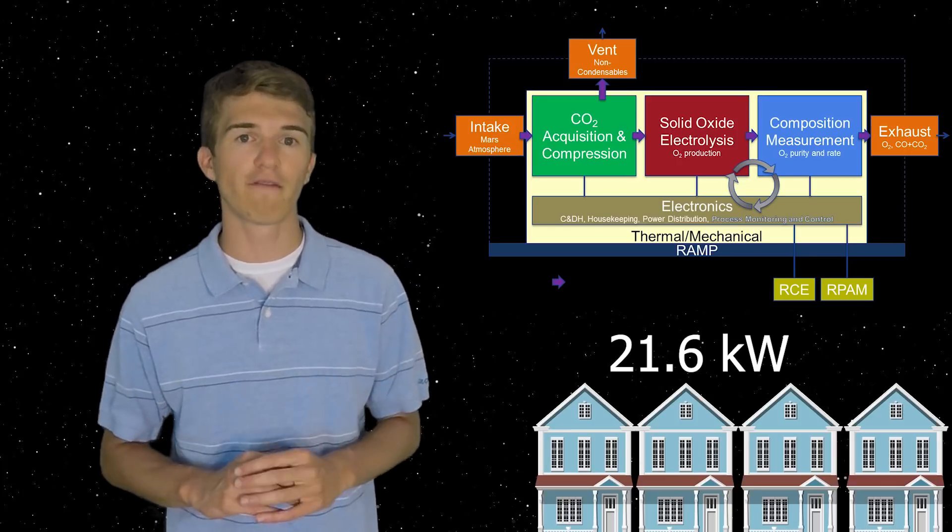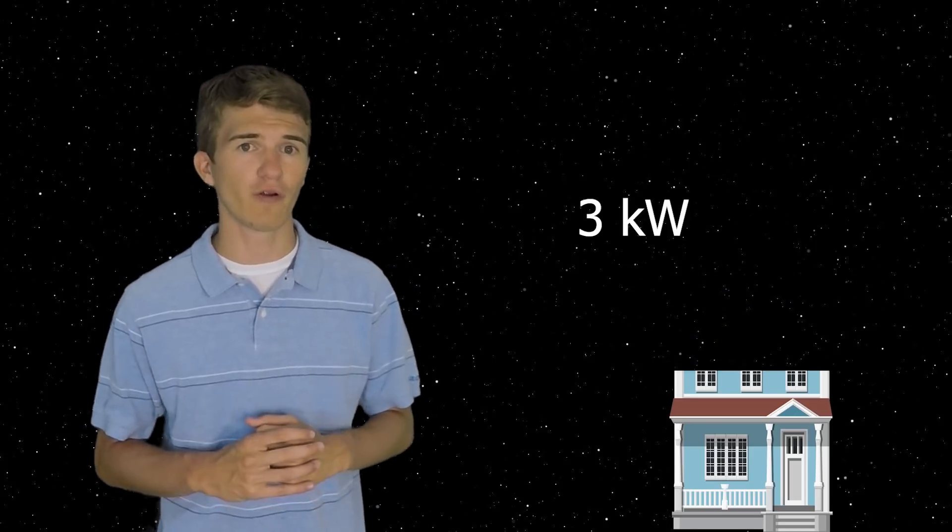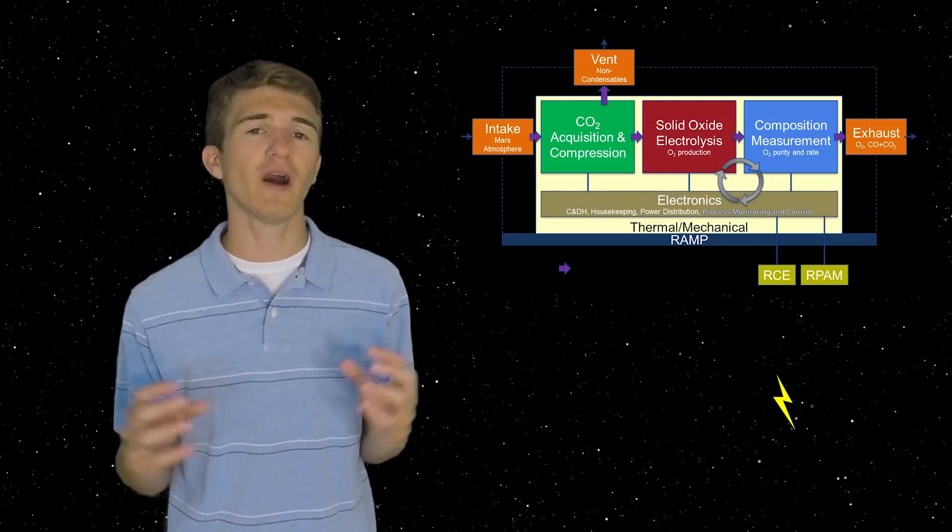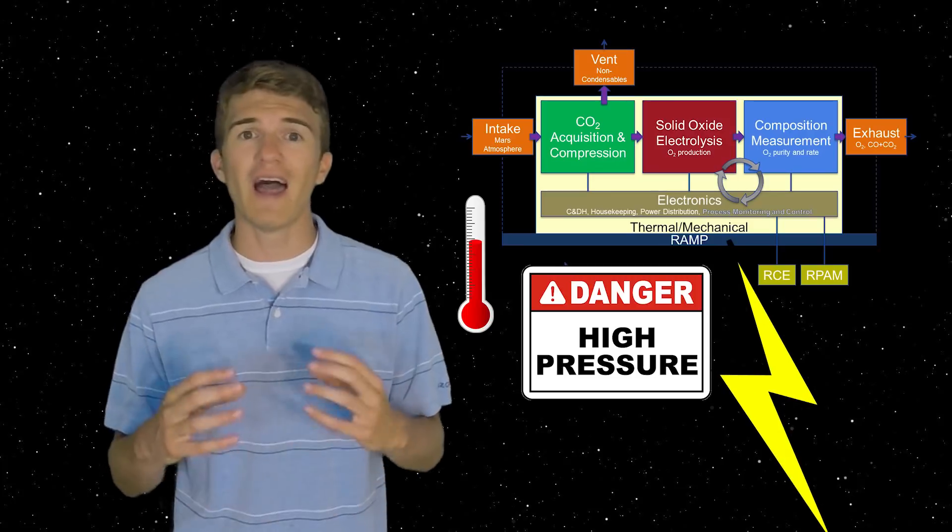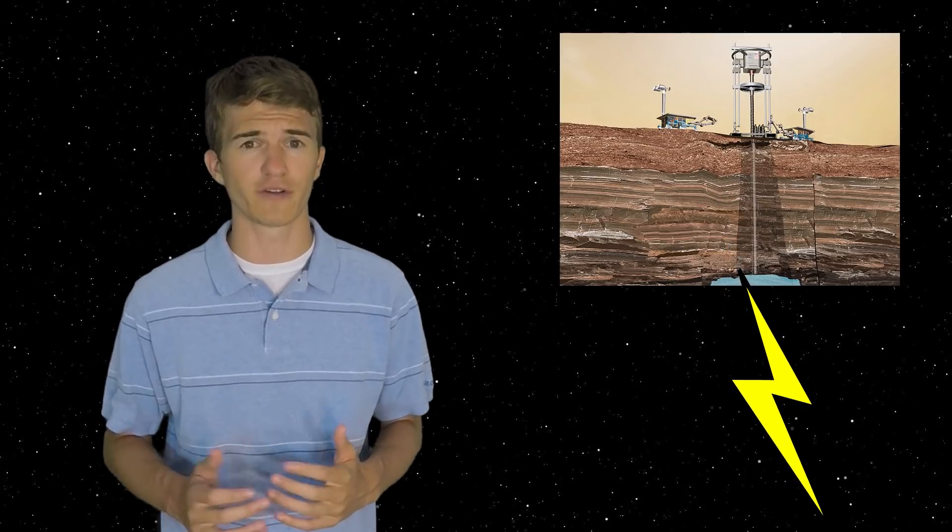Now water electrolysis is much easier. It takes around three kilowatts of power, which is less than one household here on Earth. Now the difference between these two numbers is because in the MOXIE experiment, it has to take in the carbon dioxide, raise it to a high temperature, a high pressure, and then separate the oxygen atom. Whereas for water electrolysis, you don't have to raise it to nearly as high a pressure or temperature. Therefore, it's much easier to separate that oxygen atom.